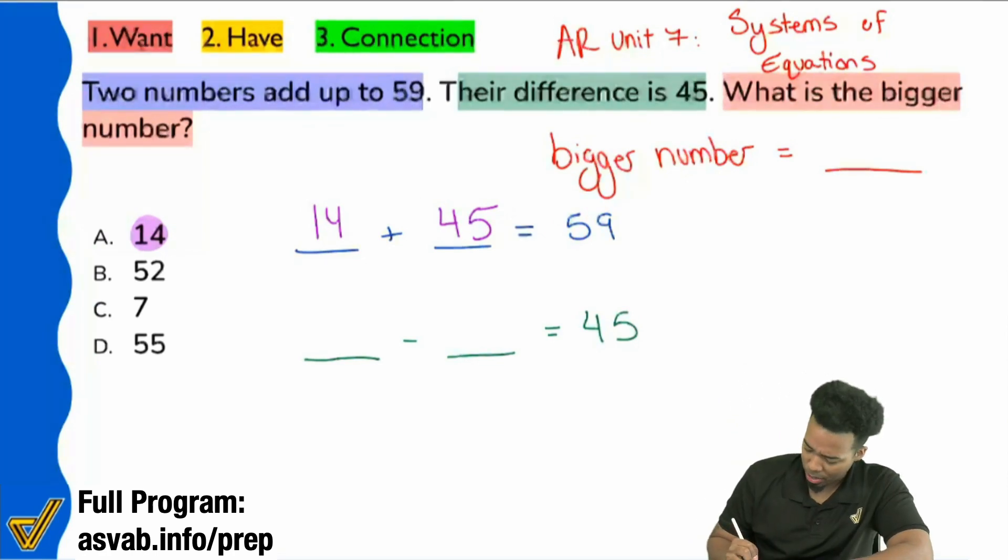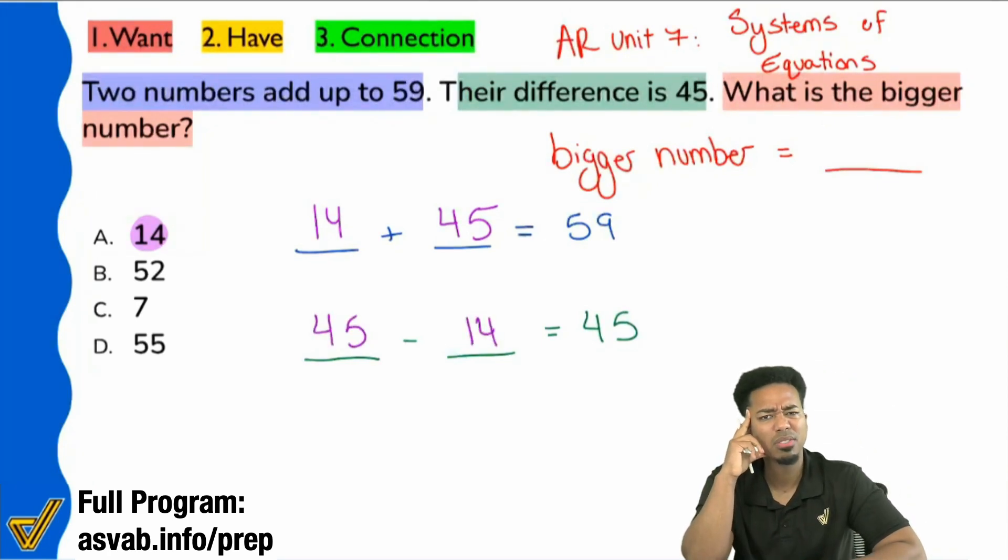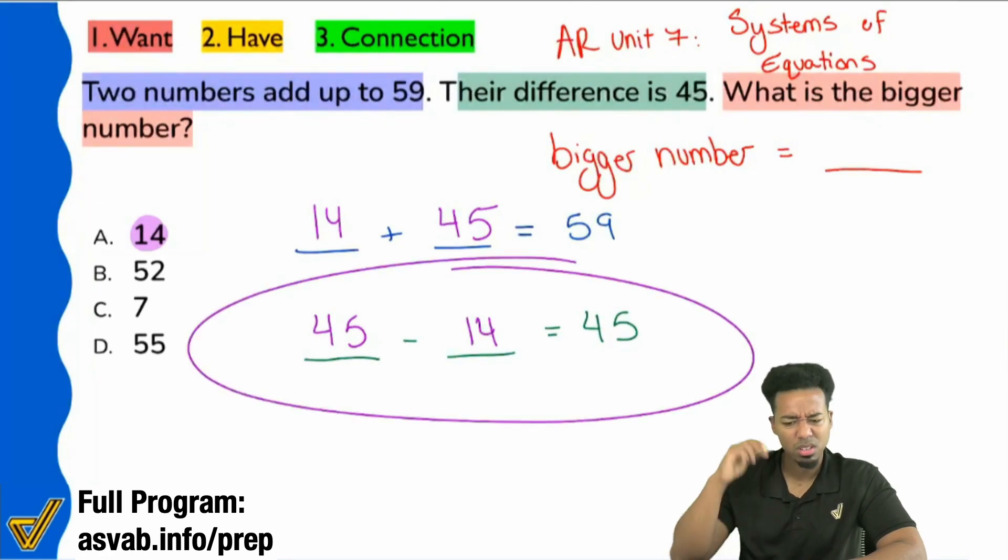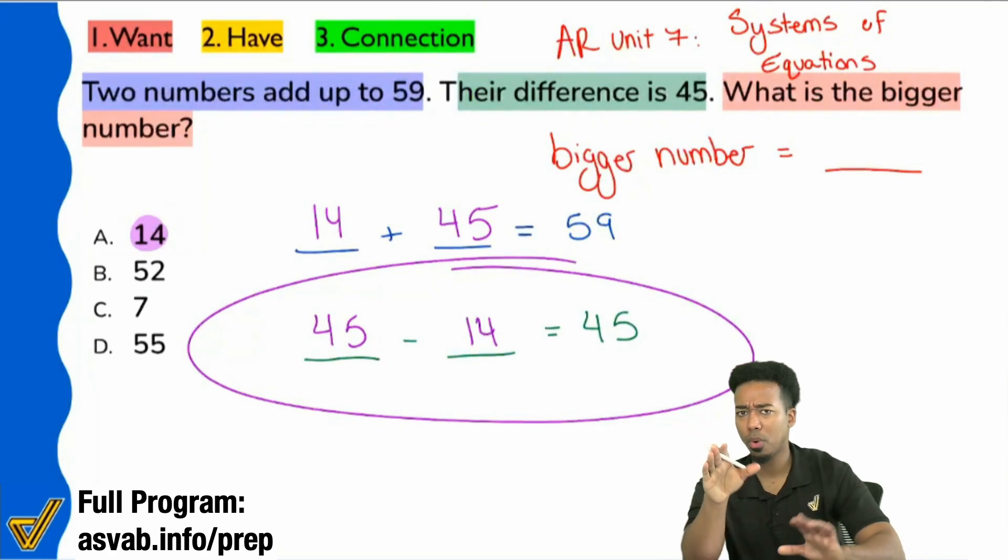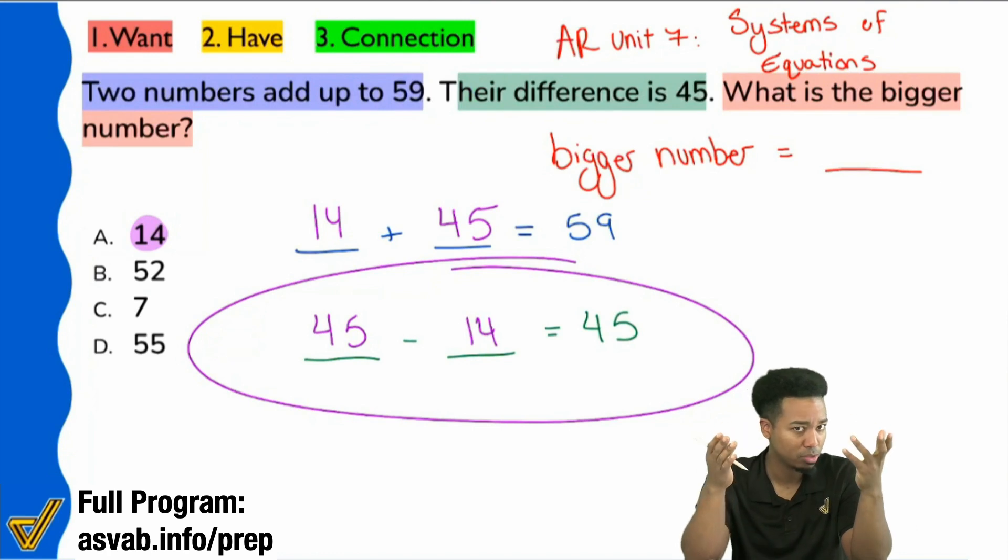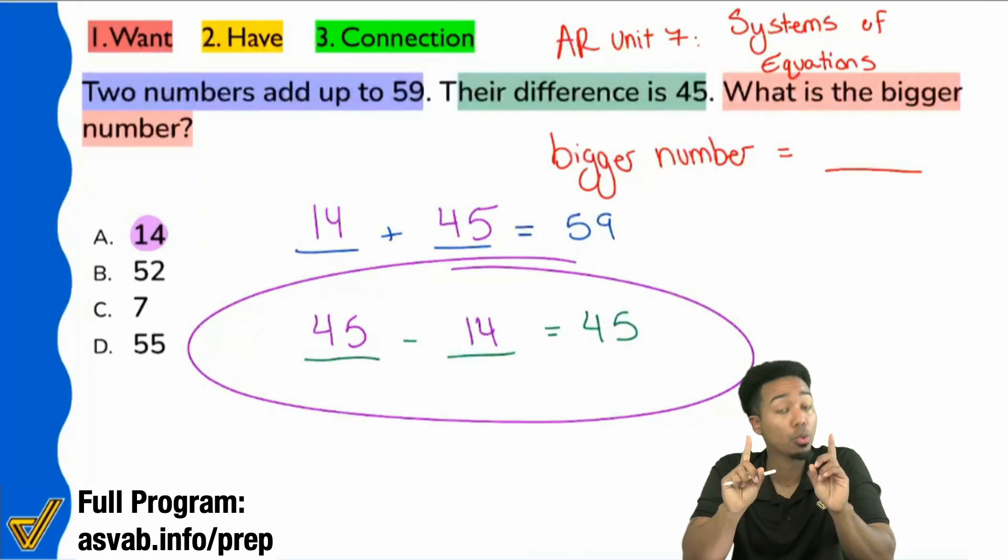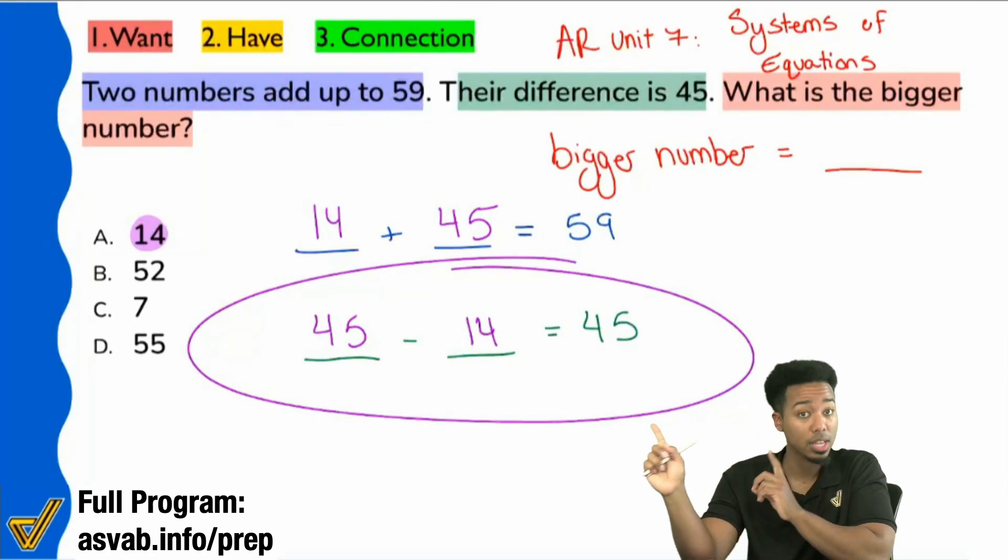But if I went ahead and subtracted these numbers, is 45 minus 14, is that 45? Is that true? No, that's not true. So before I continue, are we starting to see how the process of elimination strategy works here? Are you starting to see what we're doing?